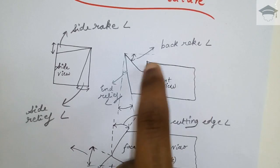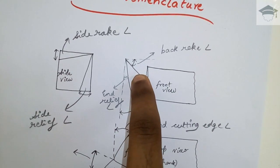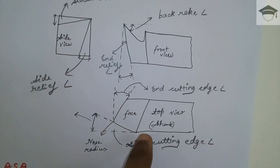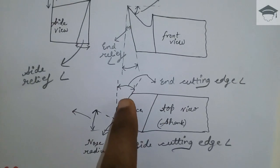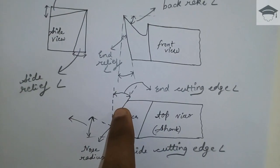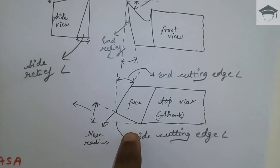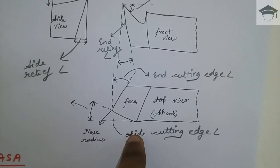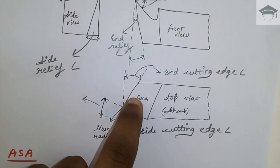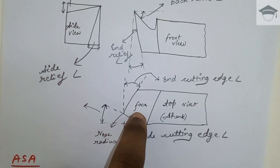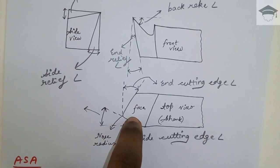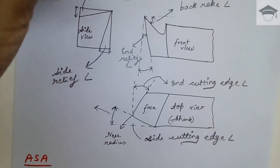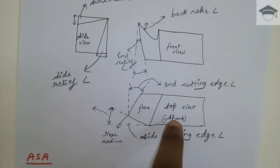This is the back rake angle, provided in order to minimize the cutting power. This is the end cutting edge angle, and this is the side cutting edge angle. When you look from the top, this portion is known as the face — that gap you see from the top is known as the face.